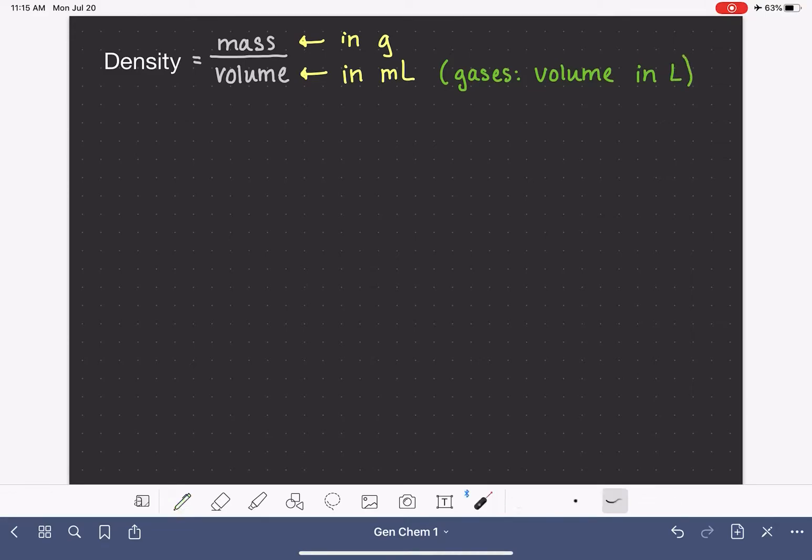We're really not going to see any examples of that until we study gases quite a bit further down the road. For now, for solids and for liquids, we are going to use grams and milliliters as our units for calculating density.